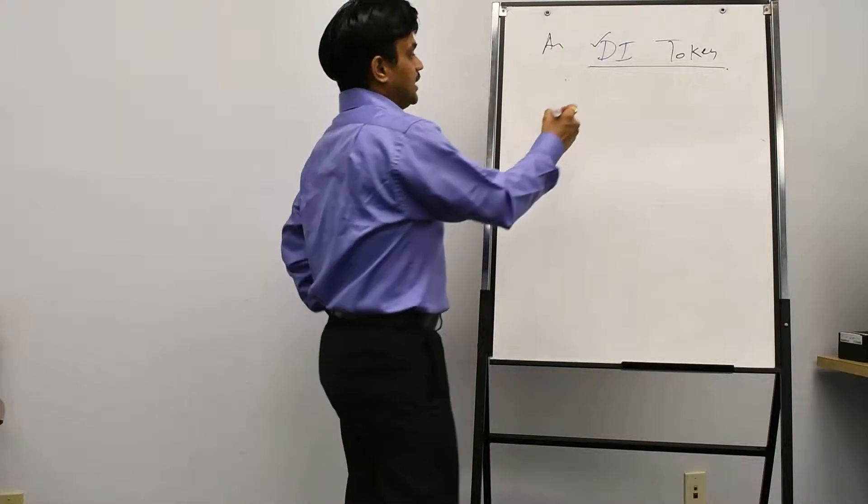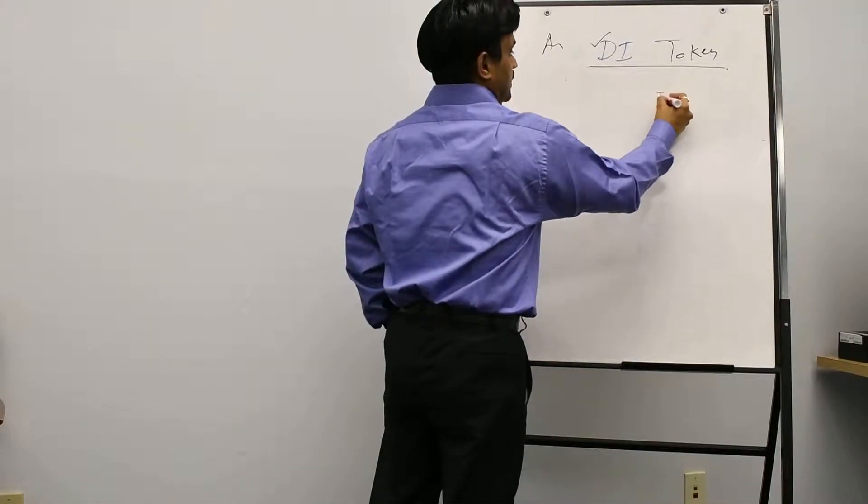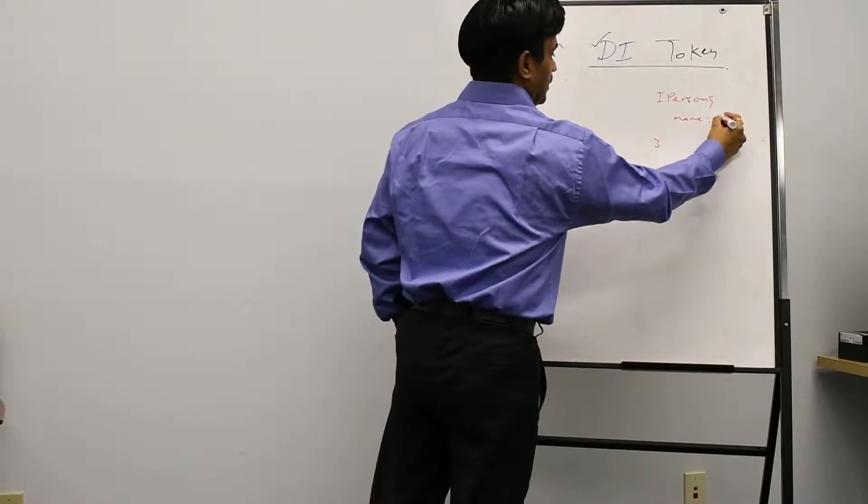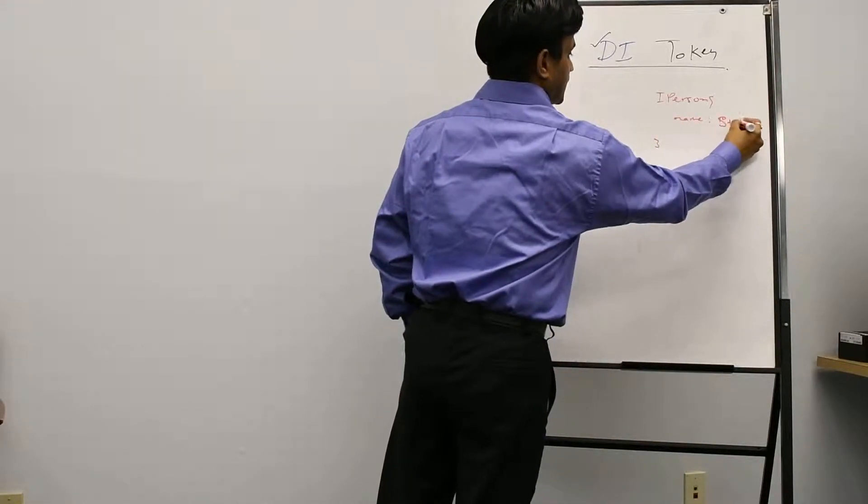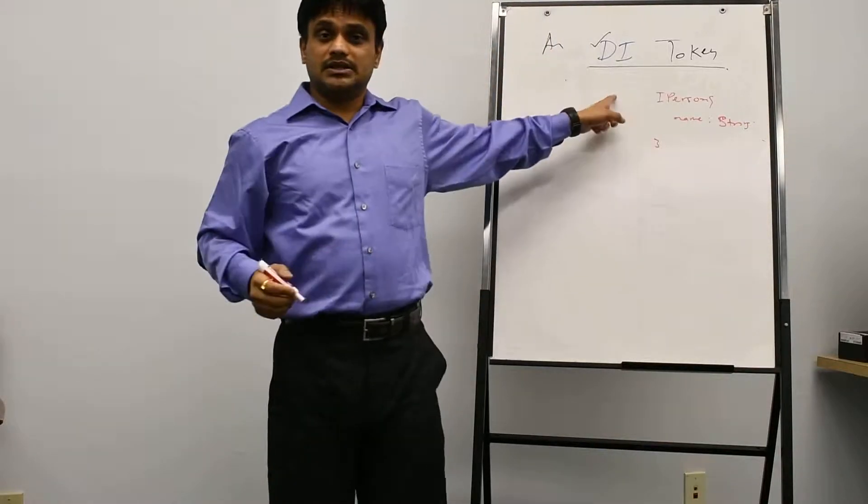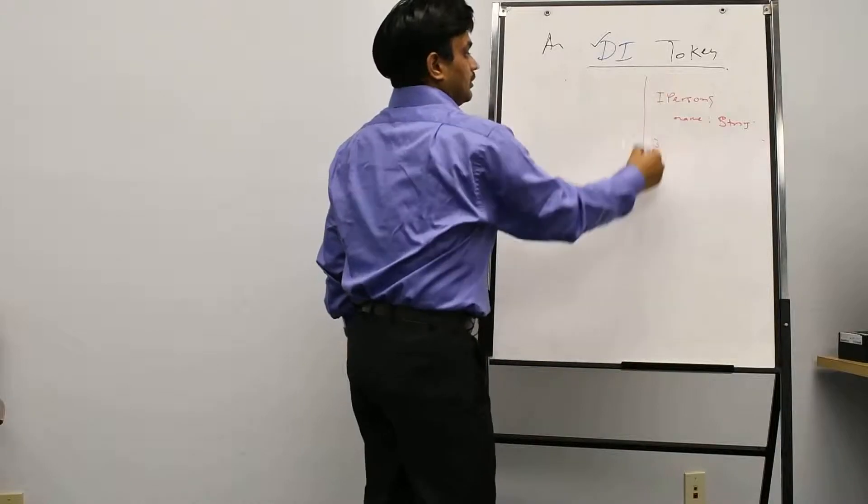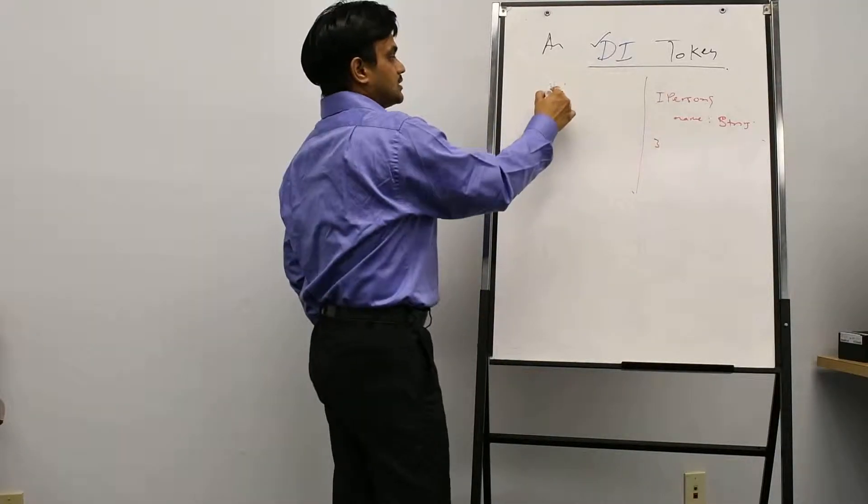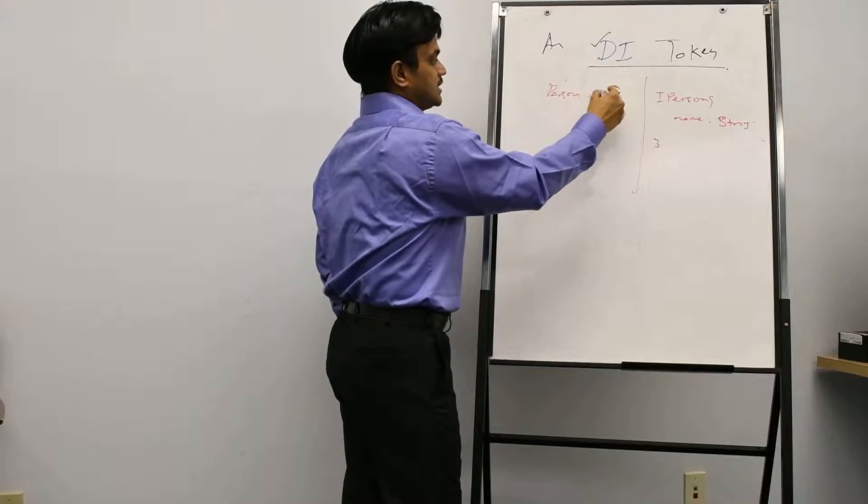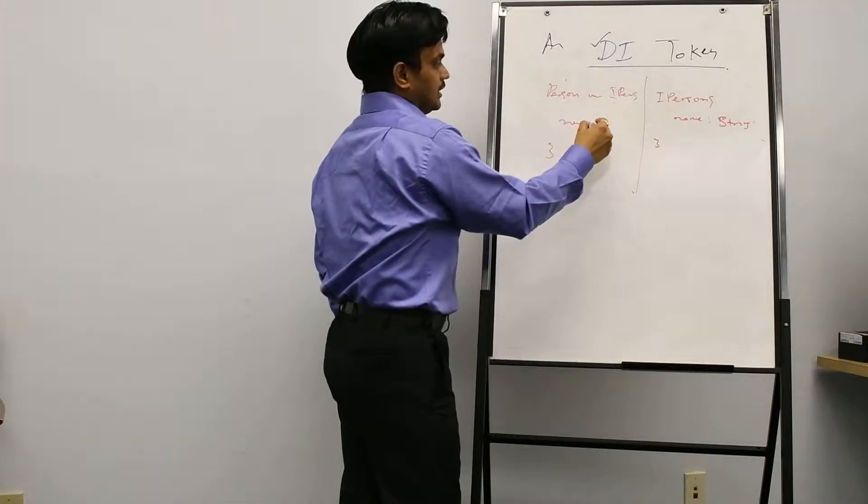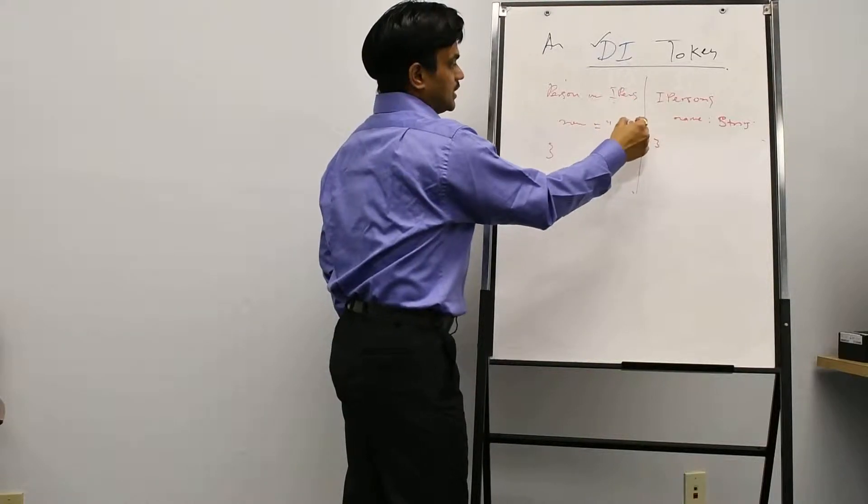For example I have an IPerson, who has a property called name, and this is of type string. And then there is a class called person which implements IPerson, and then it has name, and here I am assigning this name to Rupesh.